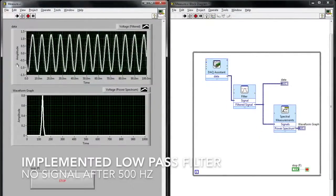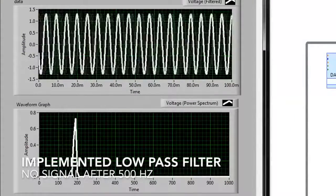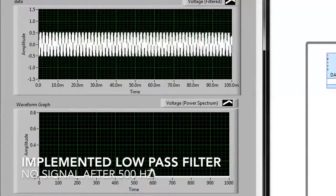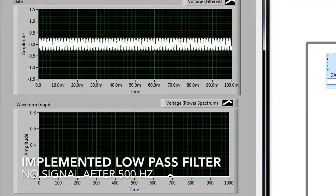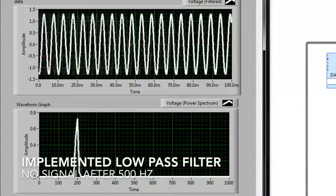Now when I hit run, I can see the same data that I was looking at before. And now as I increase my frequency, you can see as I get closer and closer to that cutoff that we had set at 500 Hertz, suddenly my signals above 500 Hertz become attenuated down. I've effectively implemented a low-pass filter along with frequency domain analysis.